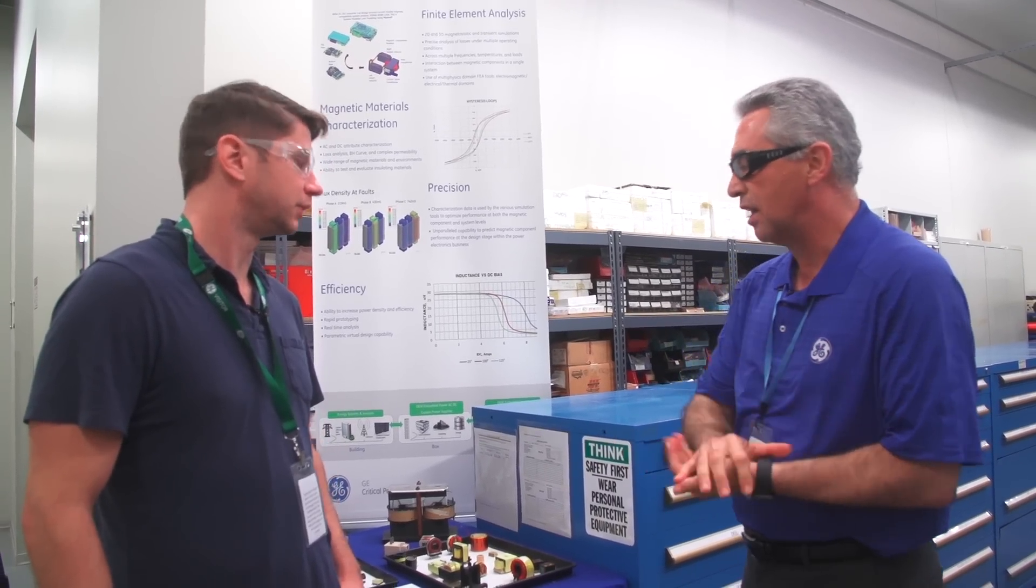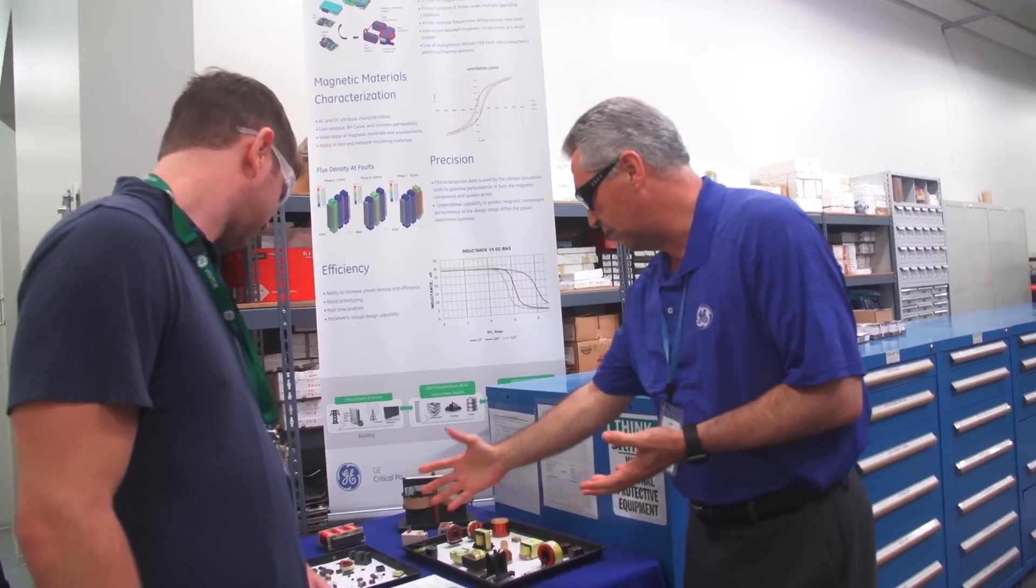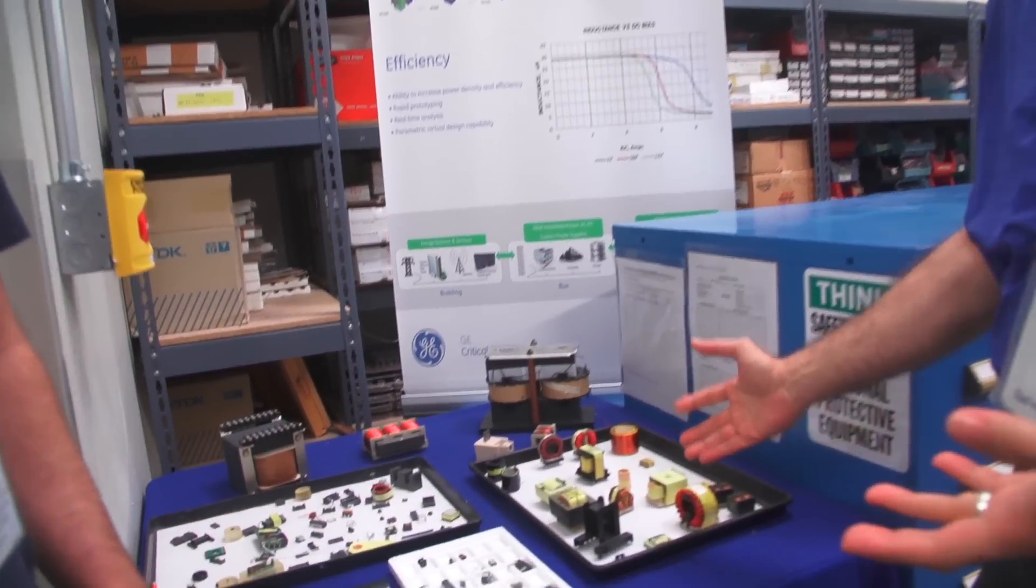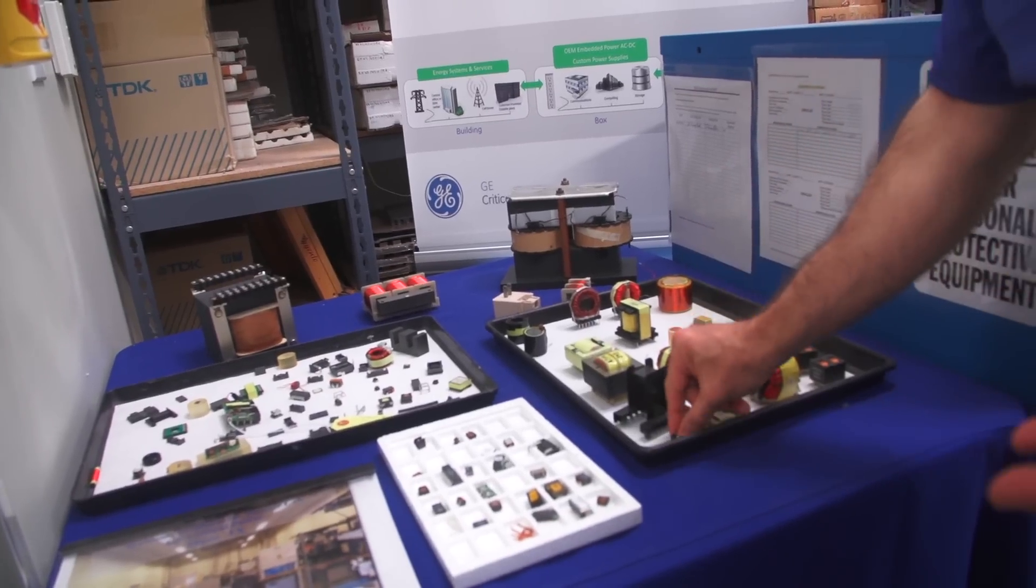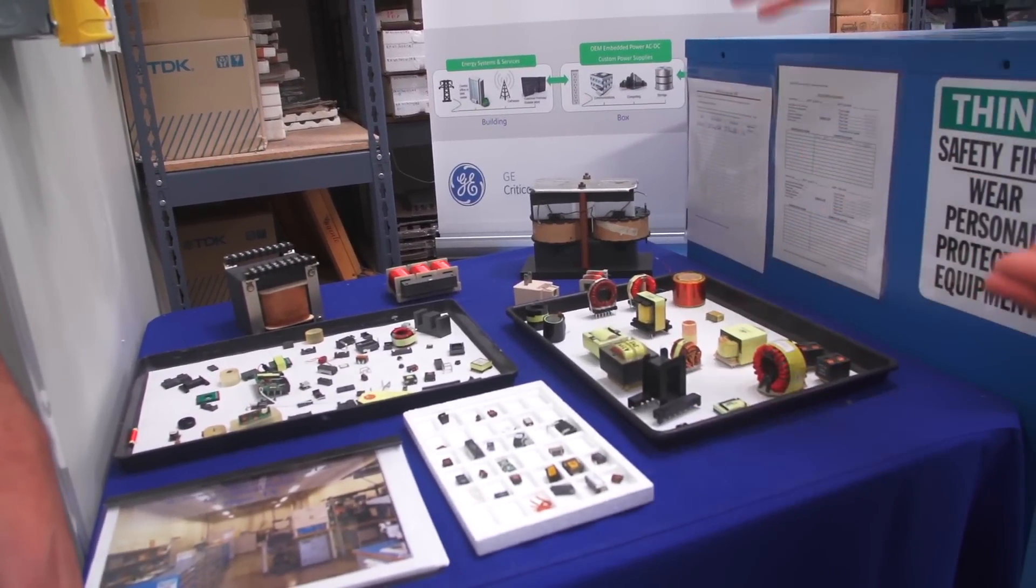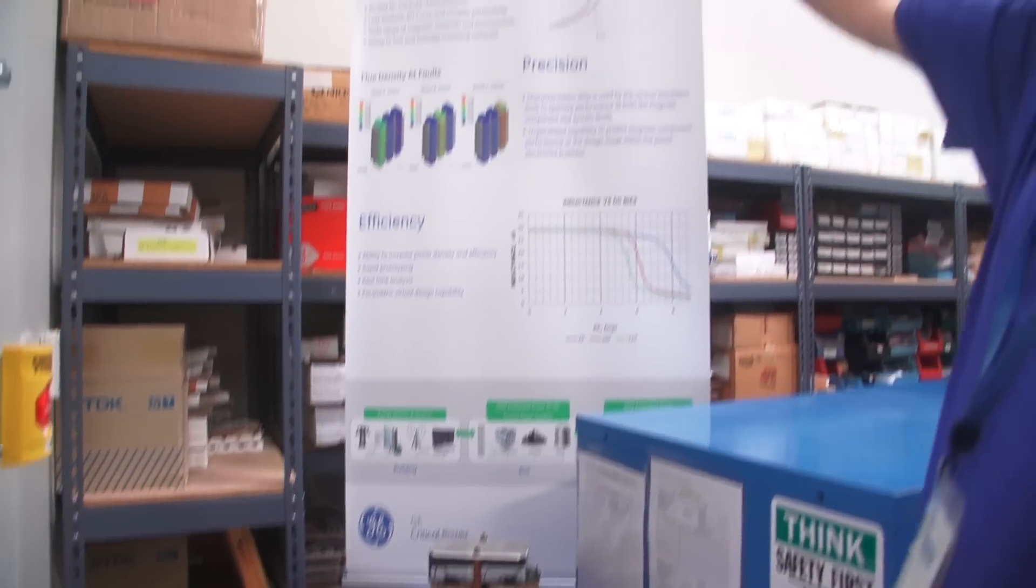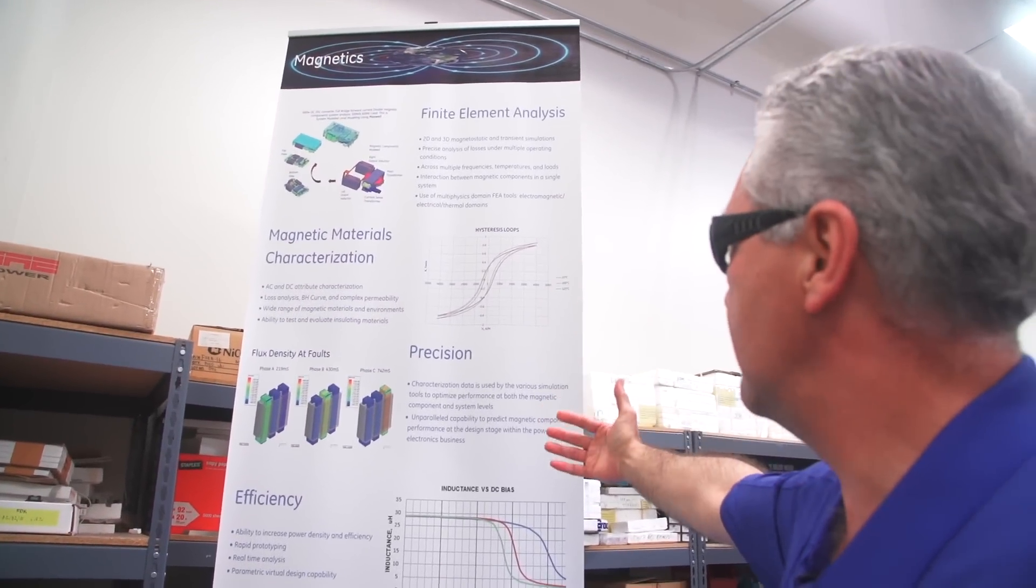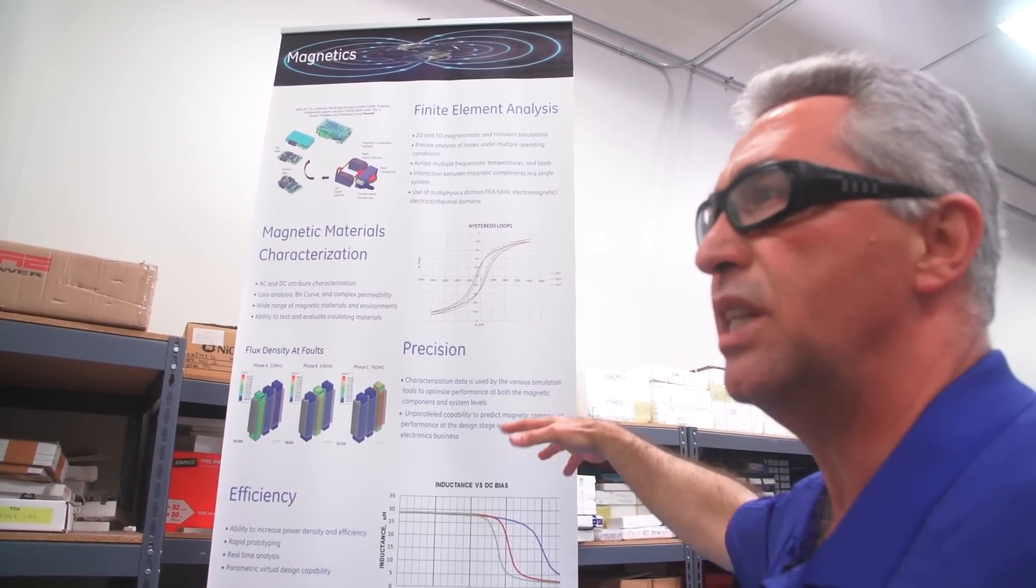What I want to show you is, this is the kind of components that our people do, from large ones to very small ones like these, which go into our point of load type of product. And this is an example of the kind of analysis using ANSYS and the kind of testing that our guys do in this lab.